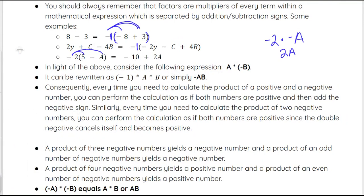Consider the expression a times negative b. It can be rewritten as negative 1 times positive a times positive b, or more commonly just negative ab — written without a negative 1 and without any multiplication signs. So every time you need to calculate the product of a positive and a negative number, you multiply the two numbers together as if they are positive, and then put a negative sign in front of your answer.